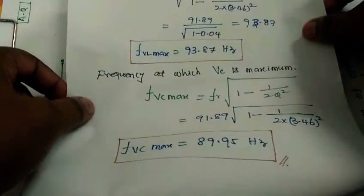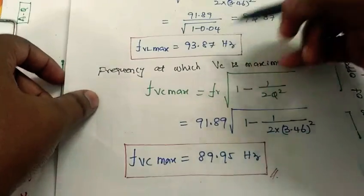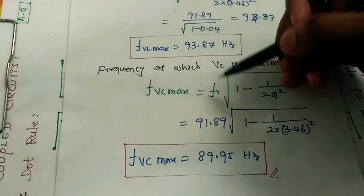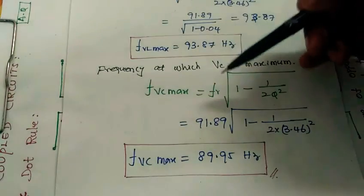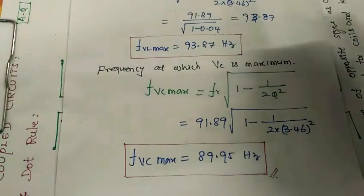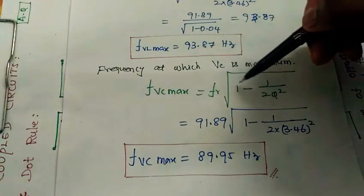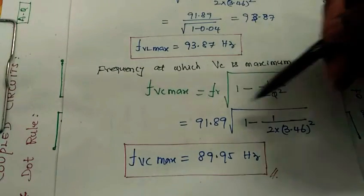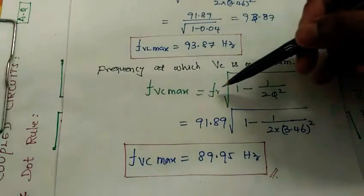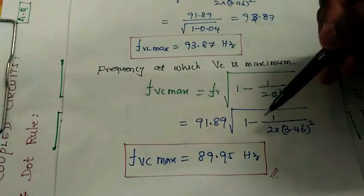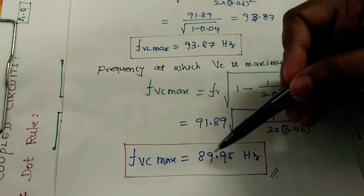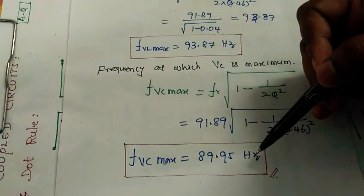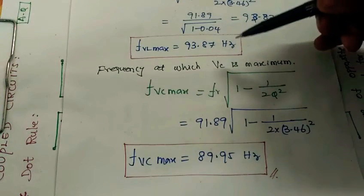For frequency at which VC is maximum, that is voltage across capacitor is maximum, the formula is FR times square root of 1 minus 1 by 2 into Q square. Using the Q value, FR times square root, when we multiply, the answer is 89.95 hertz. So this is our final answer.